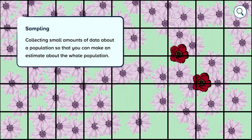Sampling is collecting small amounts of data about a population so that you can make an estimate about the whole population. But we have to make sure that the samples we take are a good representation.